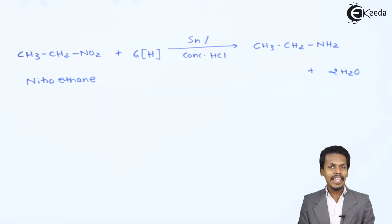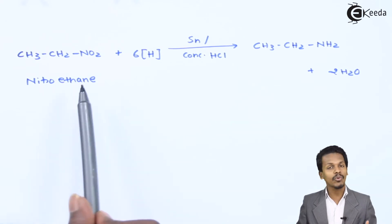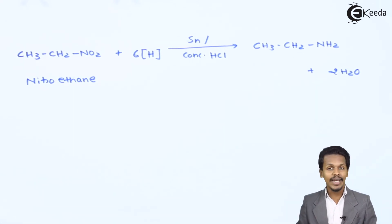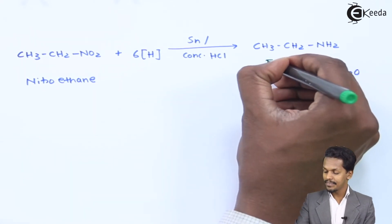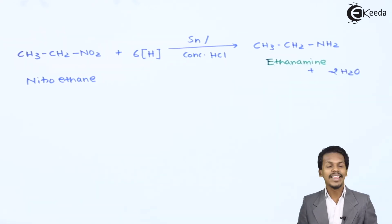Therefore in this case, because the initial reactant that we used is nitroethane, the product that we get is ethaneamine.